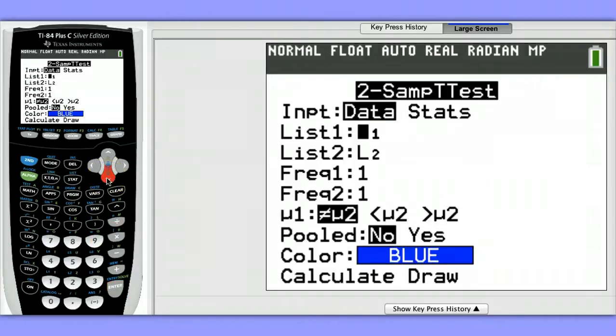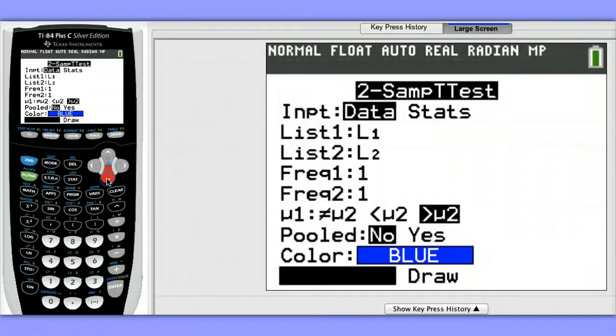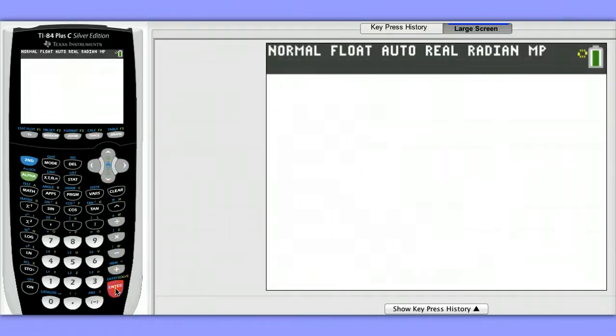My data is stored in List 1 and List 2, and the frequencies are each occurring once, so I don't have to enter a separate frequency list. We want to see if calcium helps to reduce blood pressure, so we need a higher mean for calcium treatment than for placebo treatment. So we're going to choose the greater than option here, mu1 greater than mu2. Pooled will say no, and we'll come down here to calculate.